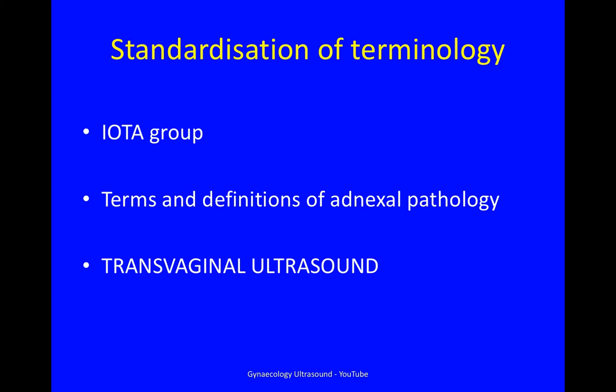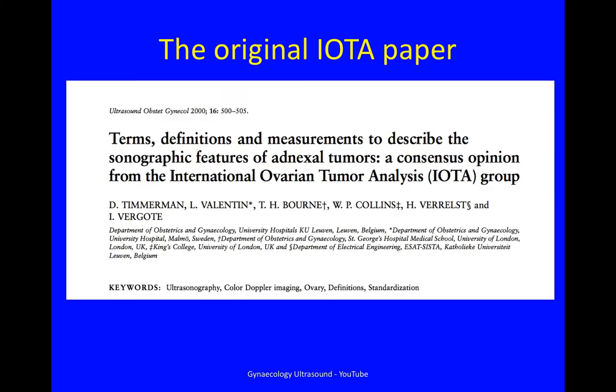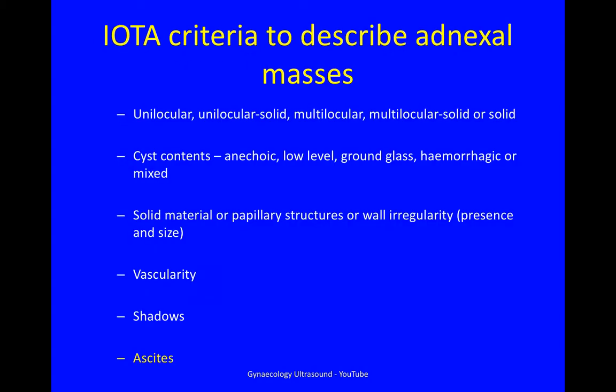The IOTA group, the International Ovarian Tumour Analysis Group, wrote terms and definitions to standardise the description of adnexal pathology, all done using transvaginal ultrasound. This was their original paper from 2000, but there have been many more since. These are the various criteria used to describe adnexal masses, and we're talking about ascites.